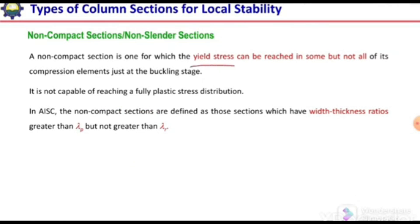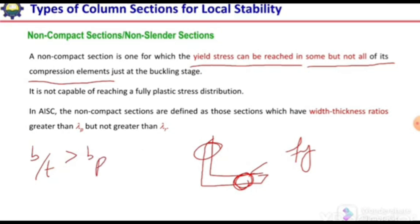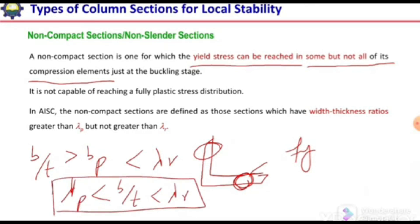Non-compact sections are those for which the yield stress can be reached in some but not all of their compression elements. For example, in an I-section, if load is applied, some part of the section will yield but the remaining portion will not. The stress distribution will not be uniform — some points reach yield strength while other parts buckle before yielding. To classify a section as non-compact, the b/t ratio must be greater than λp but less than λr.